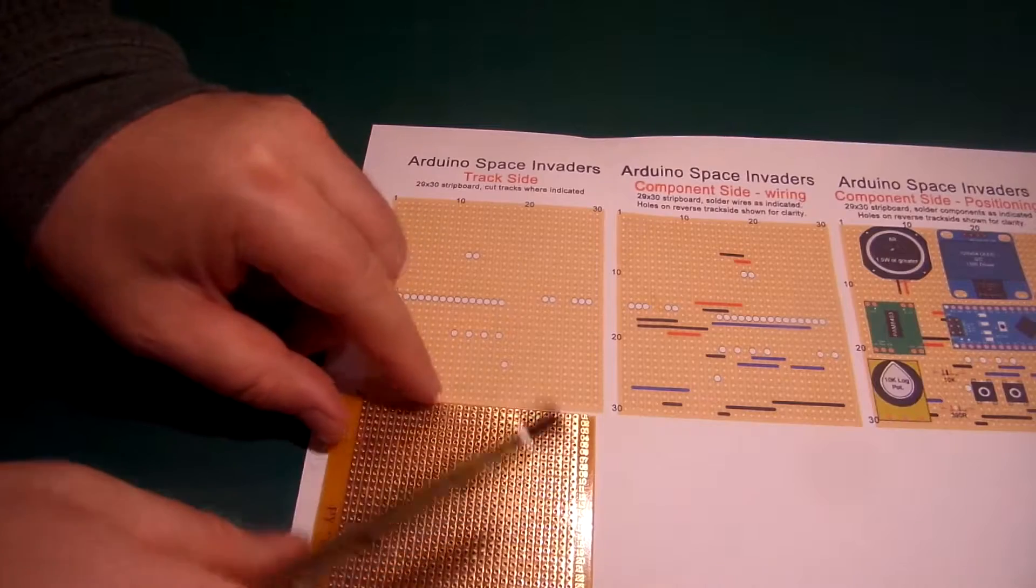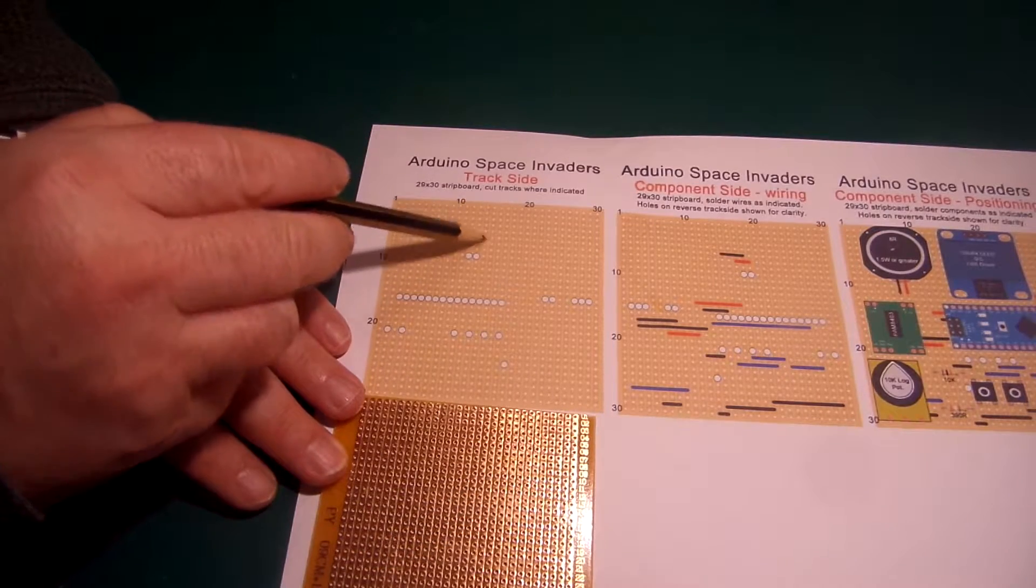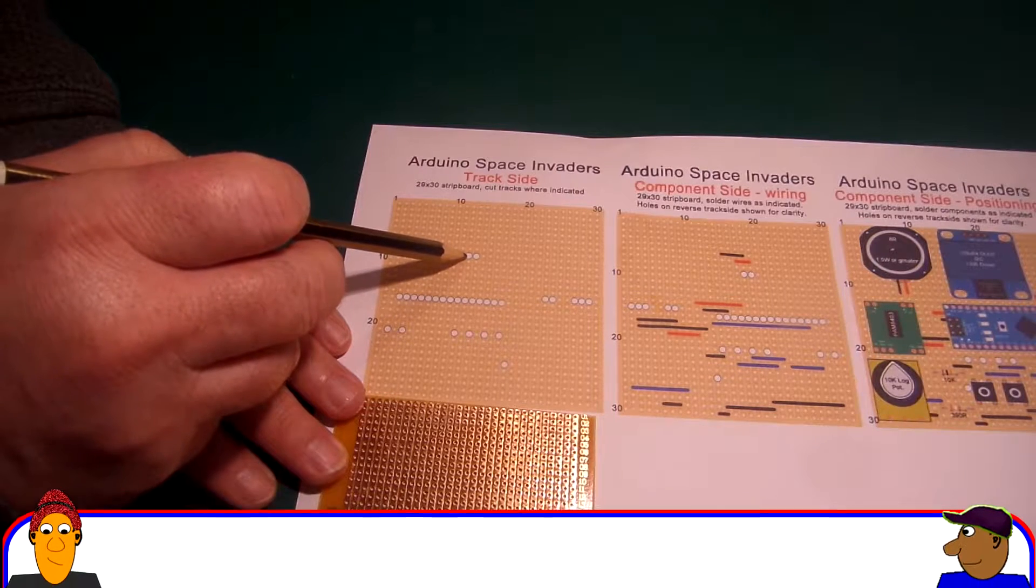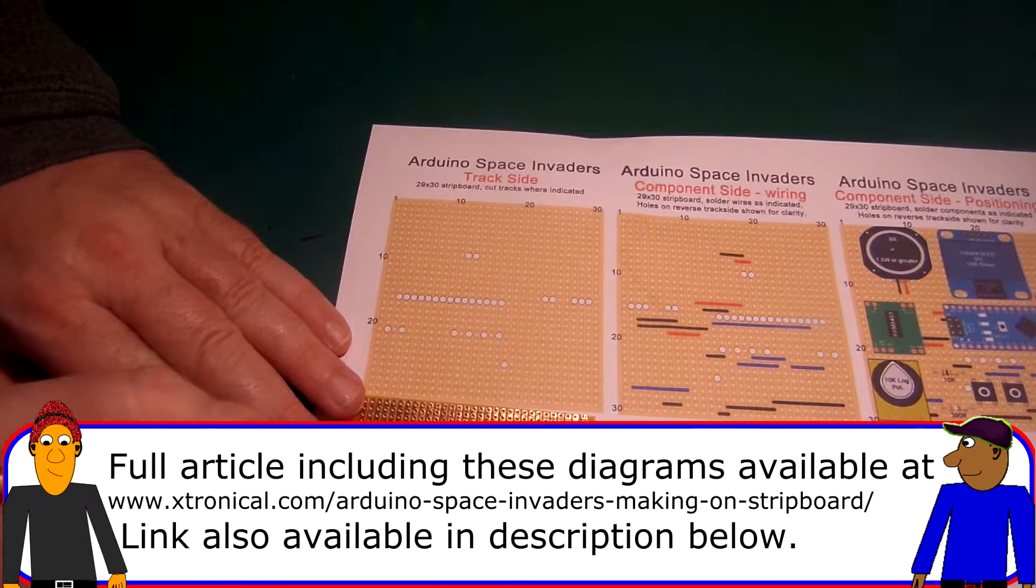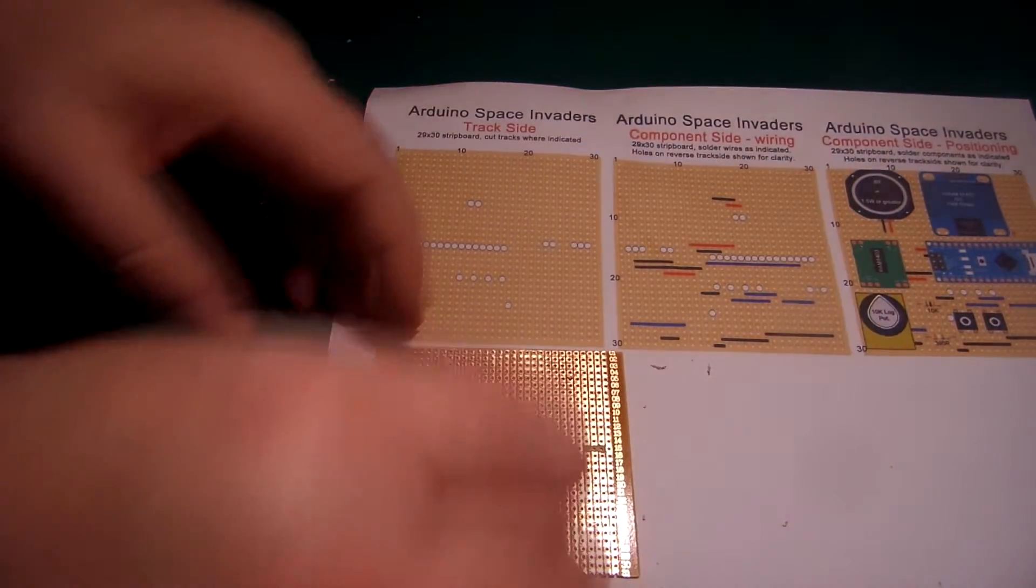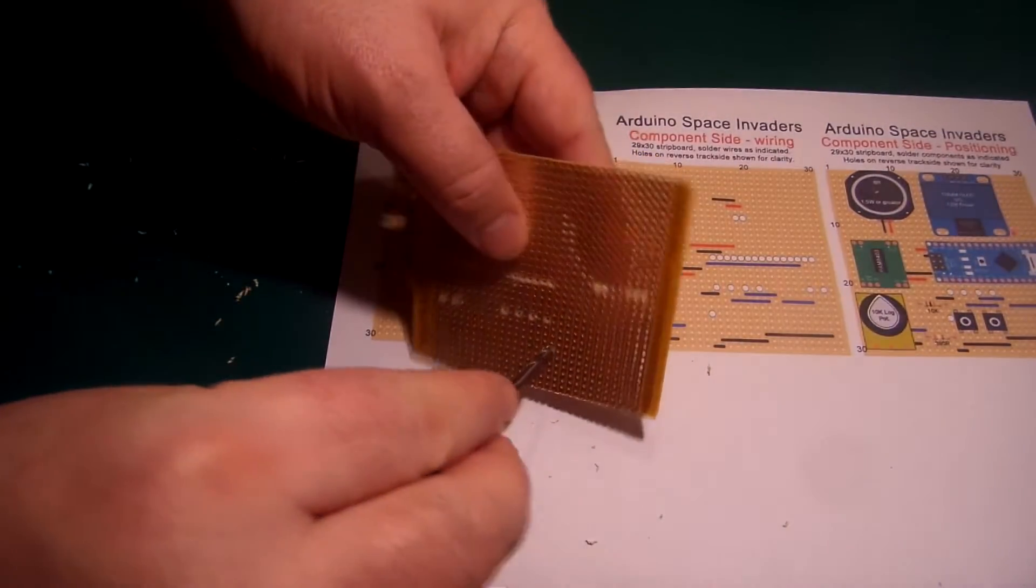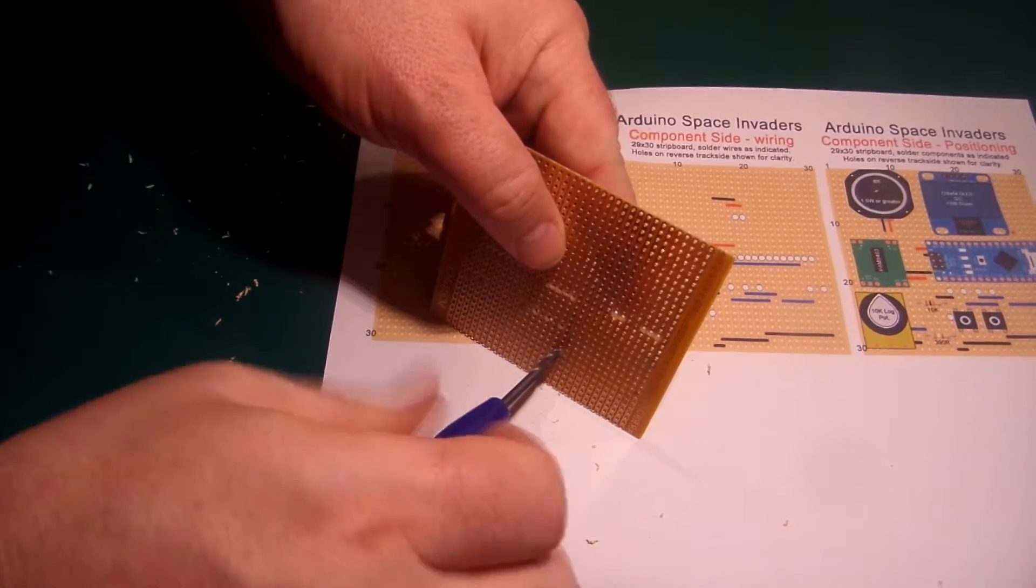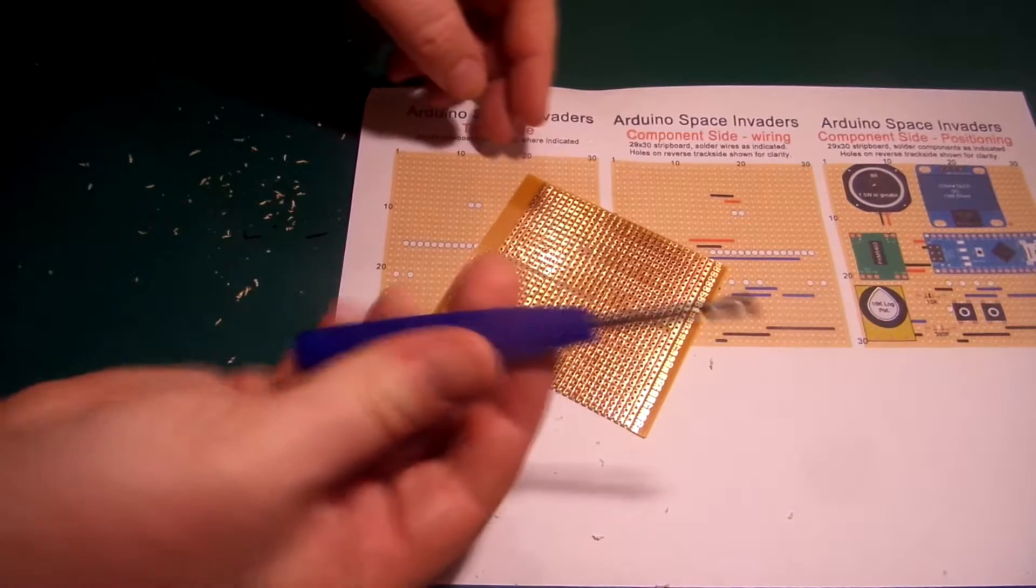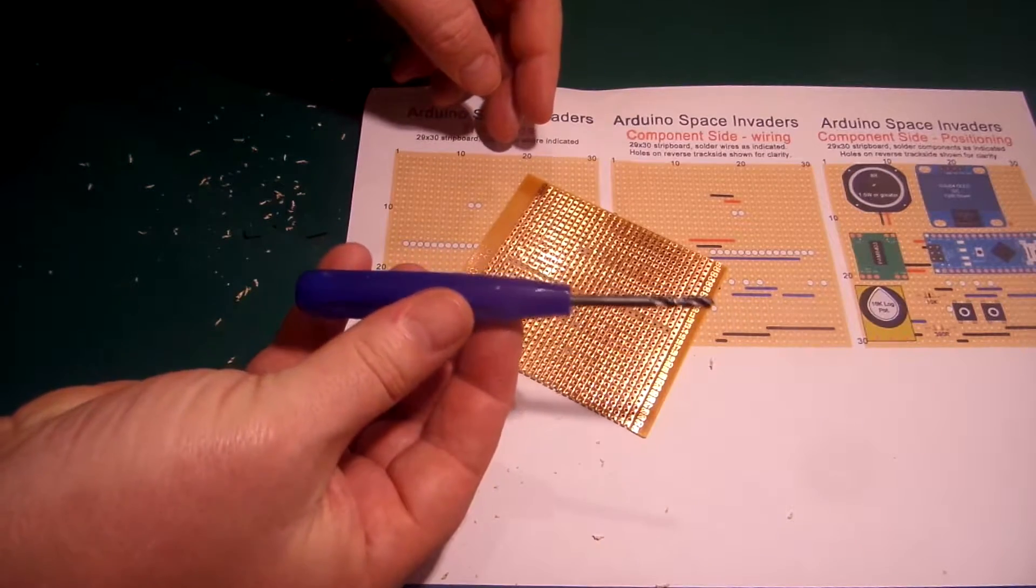With the board cut to size we need to cut some tracks to stop some elements of the circuit design from shorting together. I use the supplied diagram which I've printed out which shows where to make those cuts on the track side. I use a purpose built stripboard track cutting tool. A couple of turns is all it takes. You can use a craft knife if you don't have one of these or perhaps a drill bit, but these do make the job far easier.